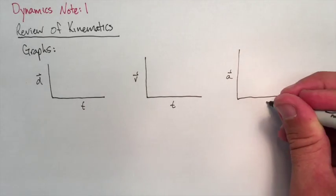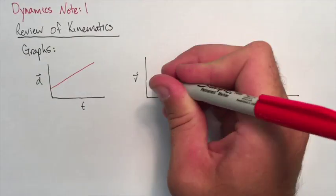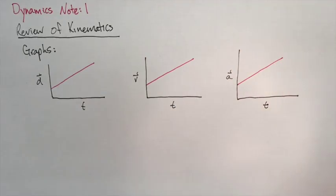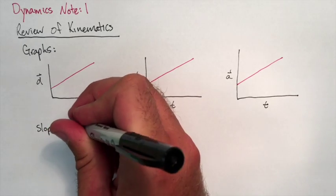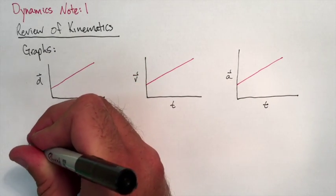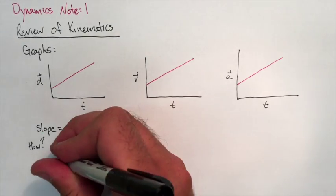Here we're just going to look at a case of increasing displacement, increasing velocity, and increasing acceleration. So what do these lines mean? Let's take a look at the slope. The slope of a DT graph is equal to velocity, but how do we know that?